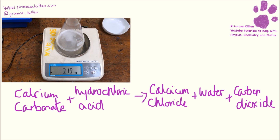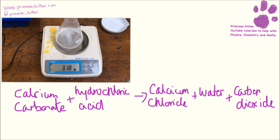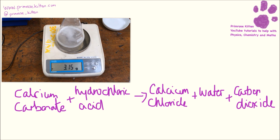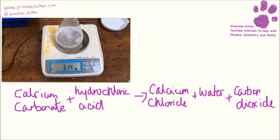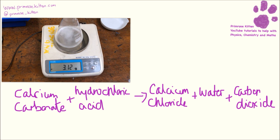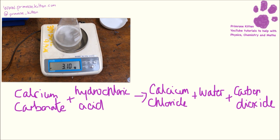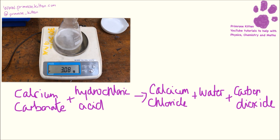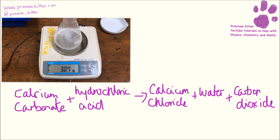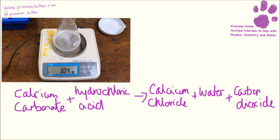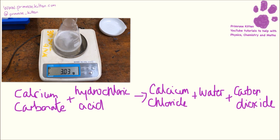The way I'm following this reaction is by looking at the loss of mass. But you'll notice that we have an acid on one side and water on the other side, so if we put indicator in we should also see a change in colour — as the reaction progresses it would get less acidic. The reason you can see all the bubbling going on is because of the carbon dioxide being produced.